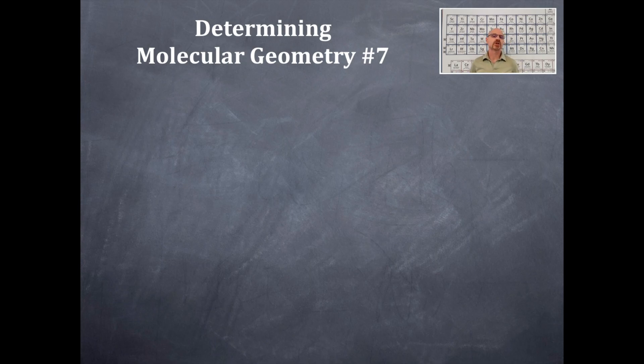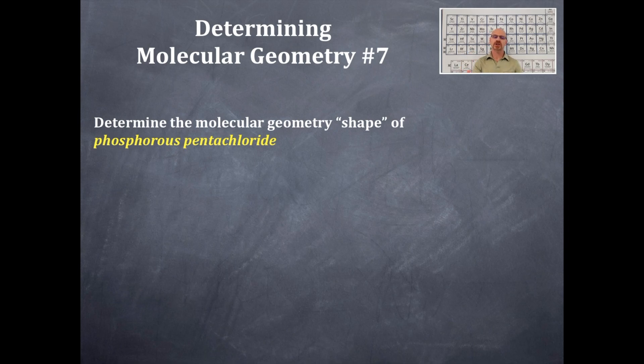Today we're going to determine molecular geometry number seven. We're going to determine the molecular geometry or shape of phosphorus pentachloride.